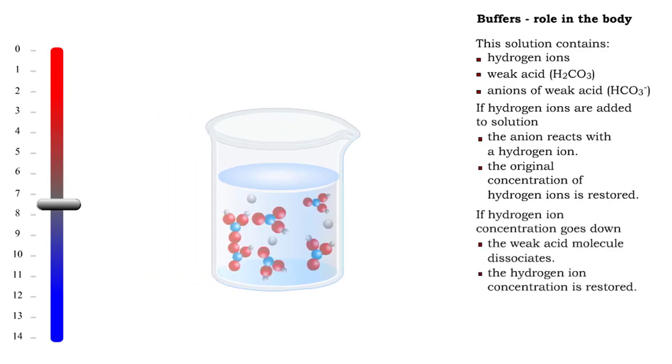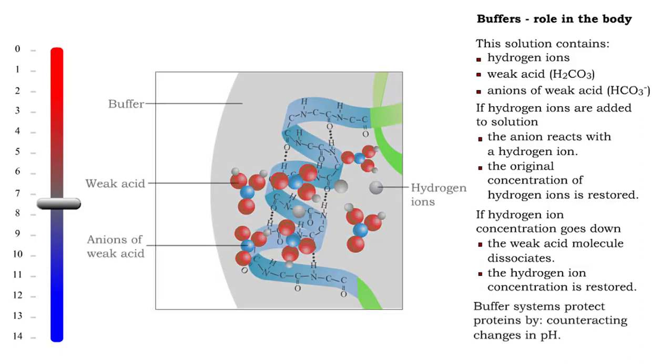Likewise, if hydrogen ions are lost from the solution, the carbonic acid dissociates, releasing a hydrogen ion and restoring the hydrogen ion concentration. Buffer systems protect proteins by counteracting changes in pH.